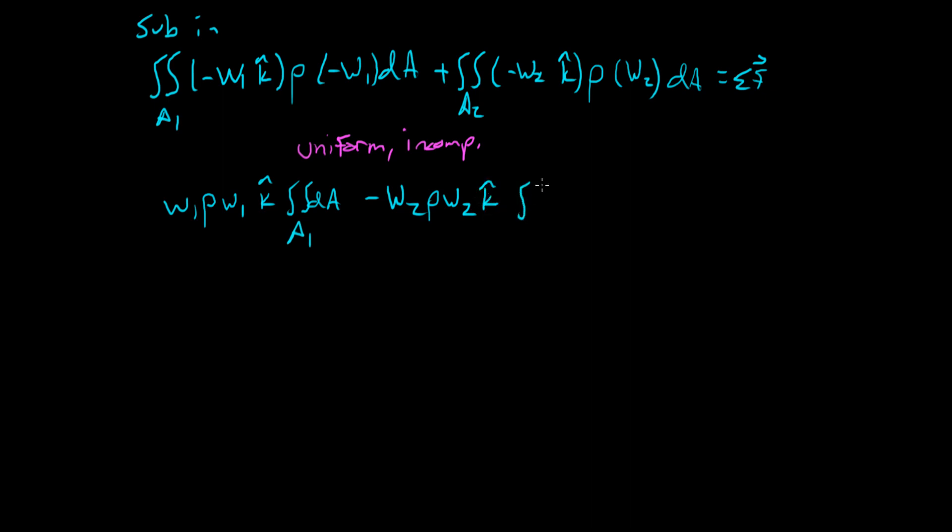W2 K hat integral over A2 D A. And that's equal to the sum of the forces. And so you can see here, these are just the areas now. And so we're left with W1 rho W1 A1 K hat minus W2 rho W2 A2 K hat. And that's equal to the sum of the forces acting on our fluid.